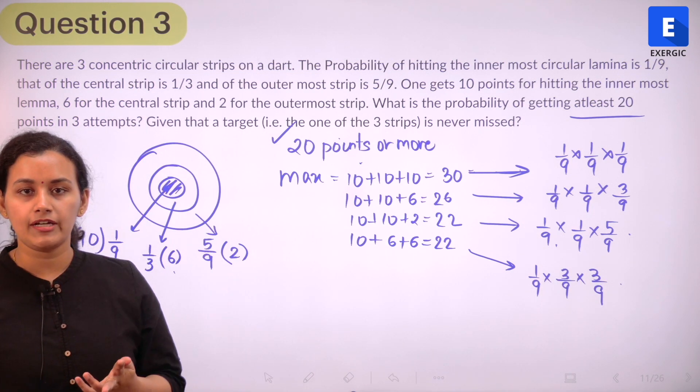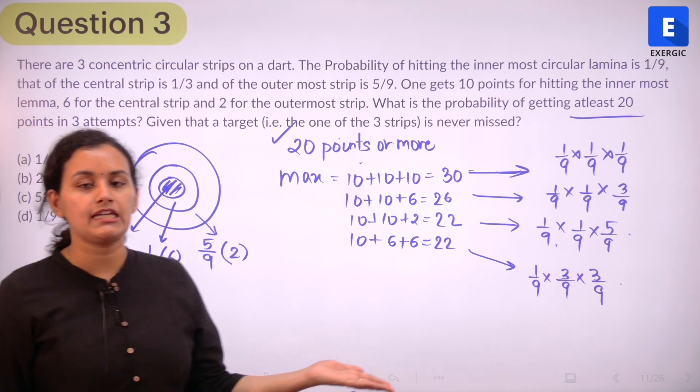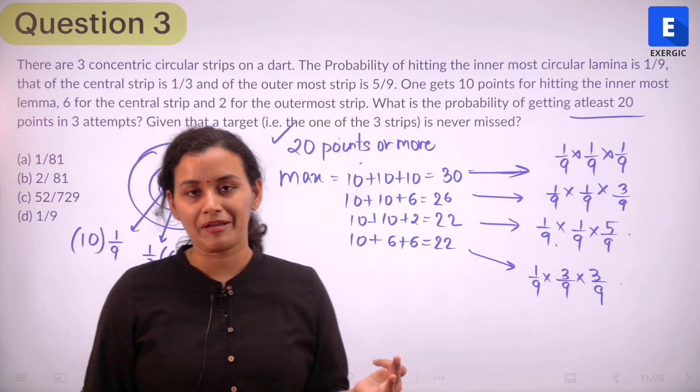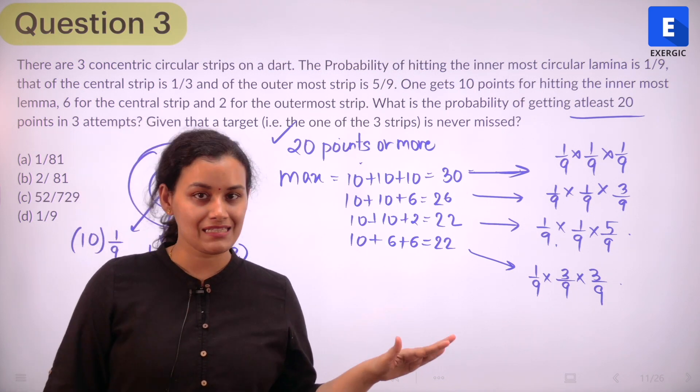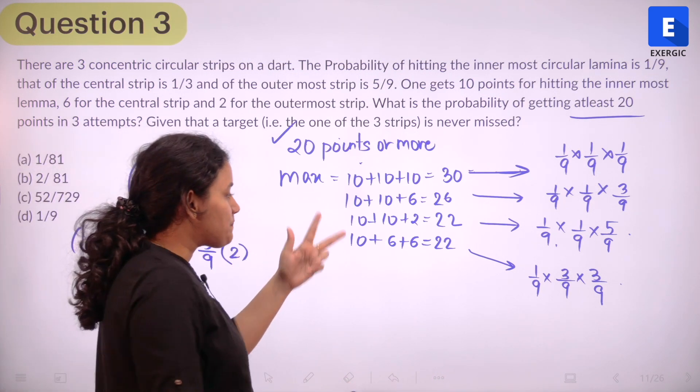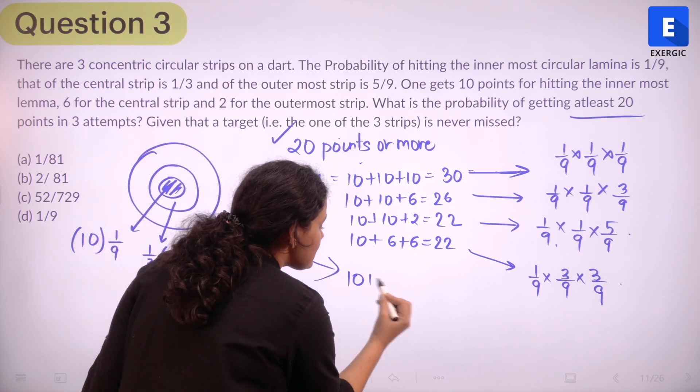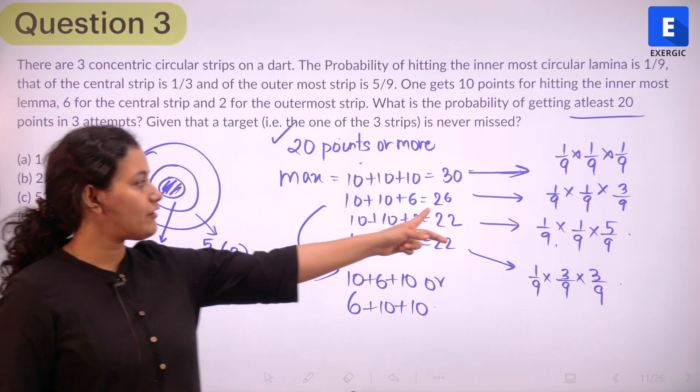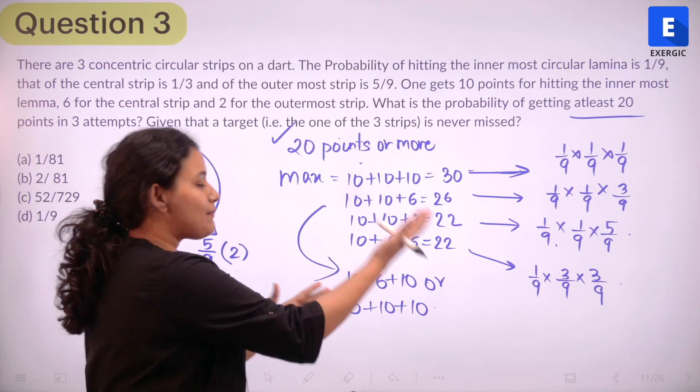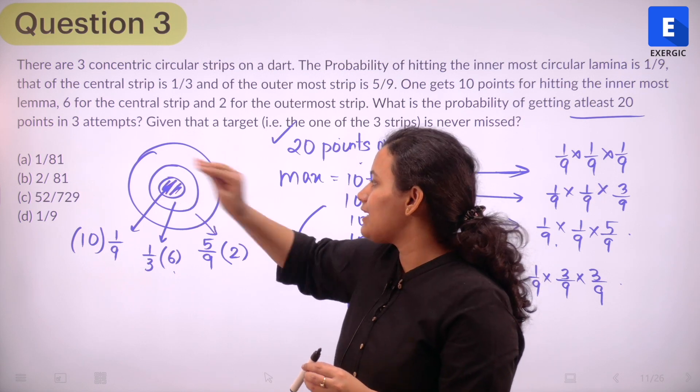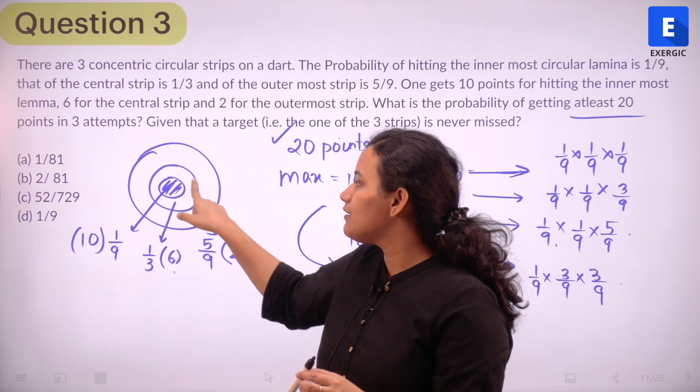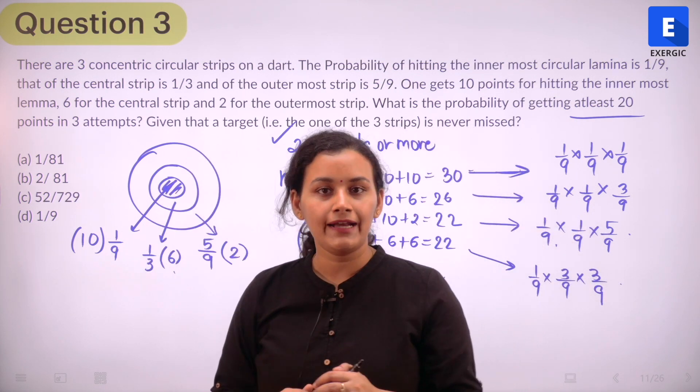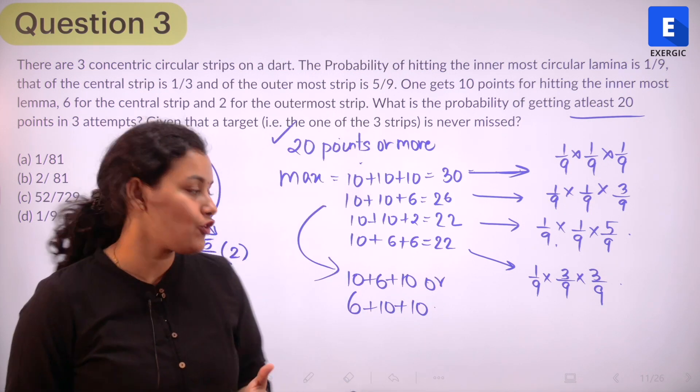So these are the individual probabilities that we have and if we just add up the probabilities, we will get the final answer, right? Is it correct? Or am I missing something? Think about it. Look at this second case. Is it not possible that I get something like 10 plus 6 plus 10 or I get 6 plus 10 plus 10? All of these cases is going to give me the sum as 26. What is this 10 plus 10 plus 6? It simply means that in the first attempt, you hit right in the center. Then second attempt again, you hit right in the center and then third, you hit the middle area. But it is also possible that the first attempt you hit in the middle area and then the last two you hit in the center. So we also need to consider the arrangement in this case.